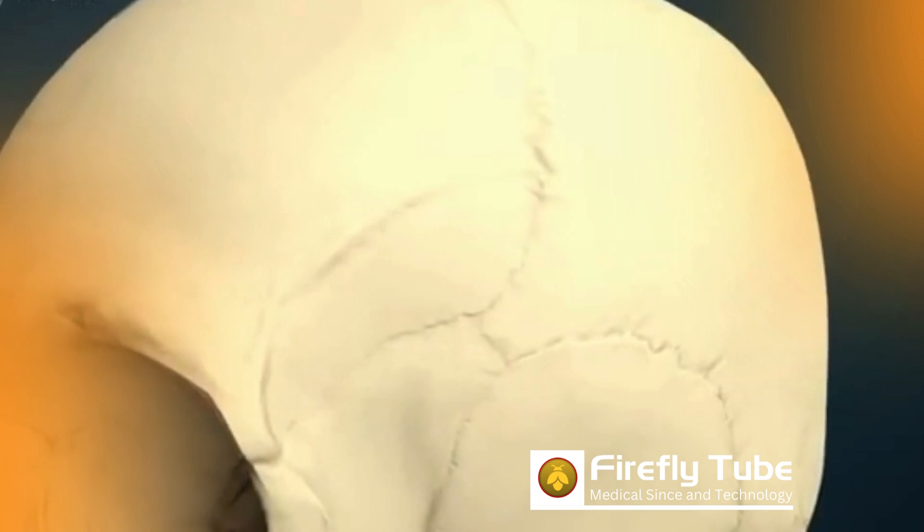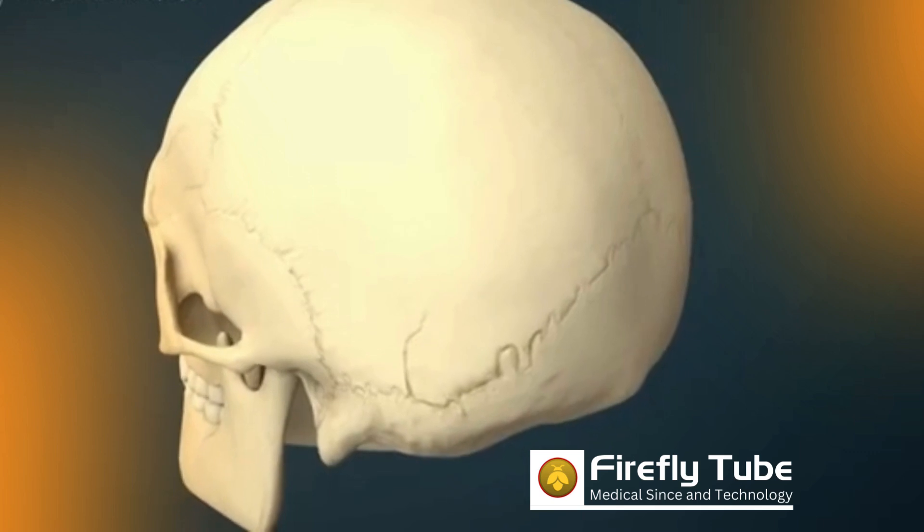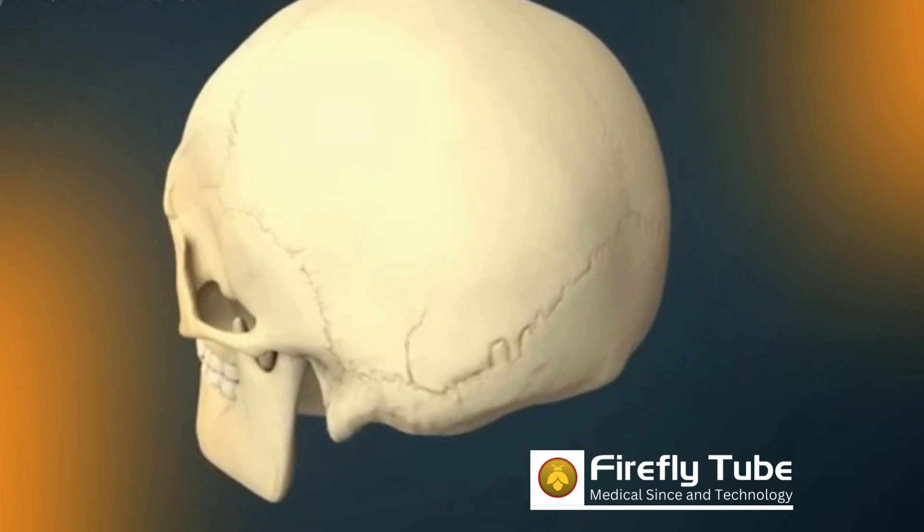The insular cortex can be found under the frontal, parietal, and temporal lobes. As the brain is very fragile, it is well protected by the hard skull, which consists of several bones.